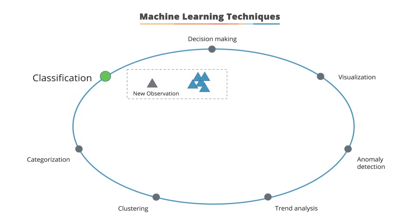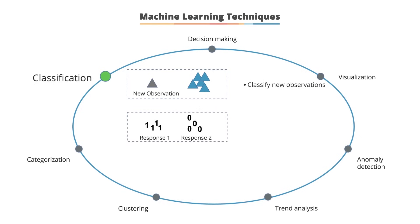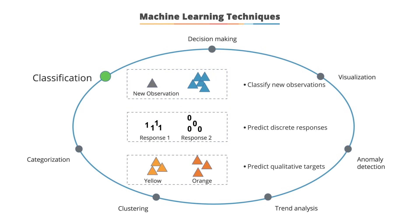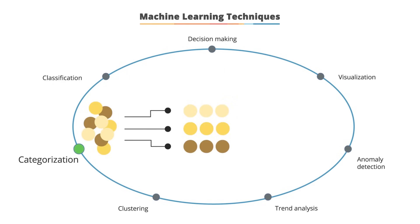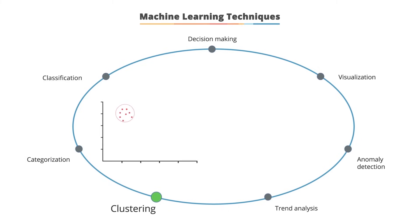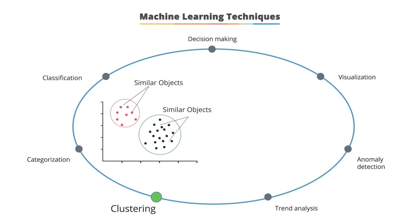Classification is a technique in which the computer program learns from the data input and uses this learning to classify new observations. It is used for predicting discrete responses and is applied when training a model to predict qualitative targets. Categorization is a technique of organizing data into categories for its most effective and efficient use — it makes free text searches faster and provides a better user experience. Clustering is a technique of grouping objects so that objects in the same group are most similar to each other, based on similarity and dissimilarity between them.